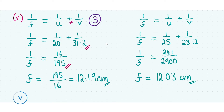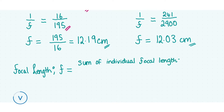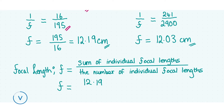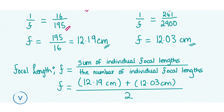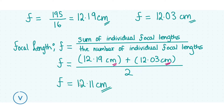To find the final focal length using all of the data we take the average: F = (12.19 cm + 12.03 cm) / 2 = 12.11 cm. That final step gets you three marks. If you forget to find the average you'll be docked one mark, but we've done it correctly here so we get full marks.